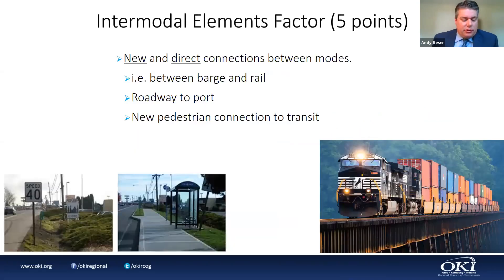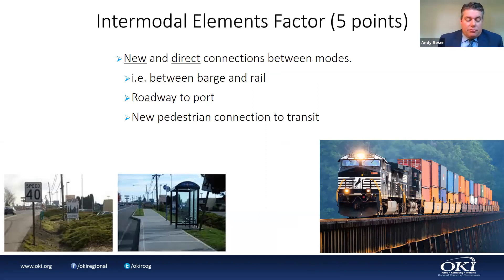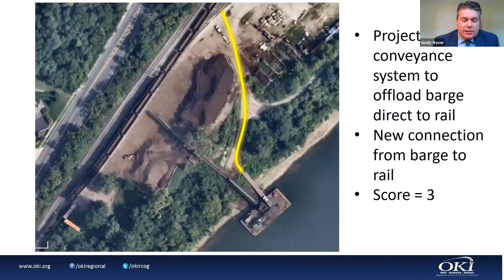Here is the table of scores for different project elements. Project elements contributing to reduced emissions cannot be combined to receive a higher score — only the most cost-effective element is considered. Many good STBG projects may not receive any points here, and that's fine — but we do want to give extra points for projects with a positive impact on air quality. The intermodal elements factor is for new and direct connections between modes — for example, a new connection between barge and rail, roadway to port, or a new pedestrian connection to transit receives points. A new conveyor belt system from a barge offloading area to a rail connection would receive three points.